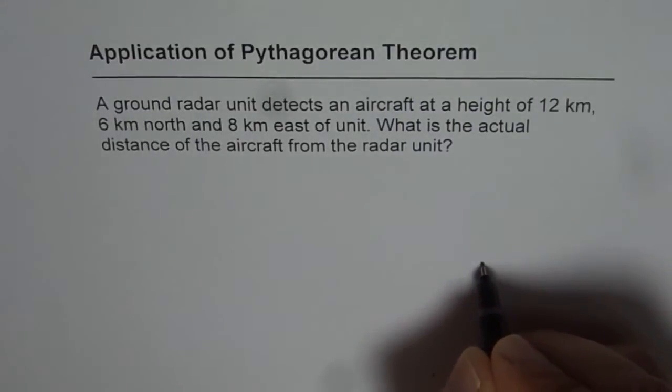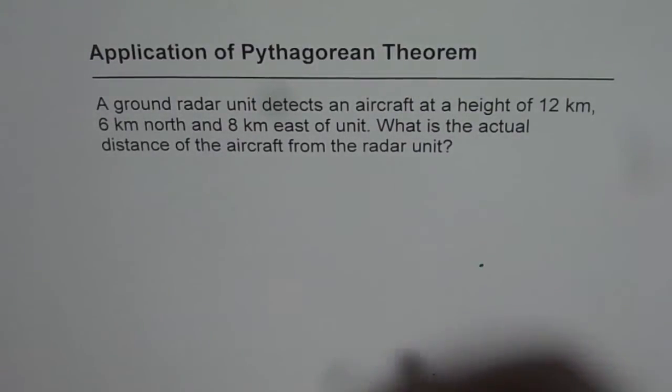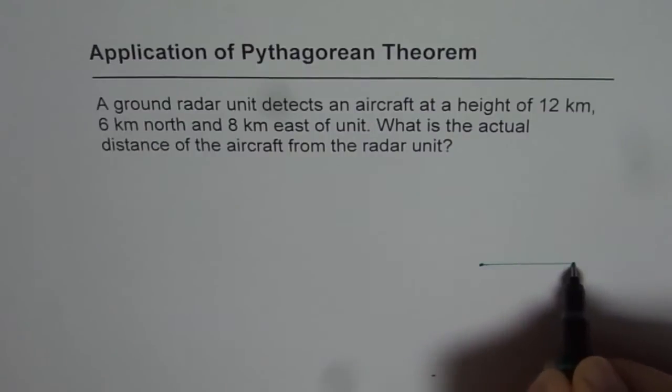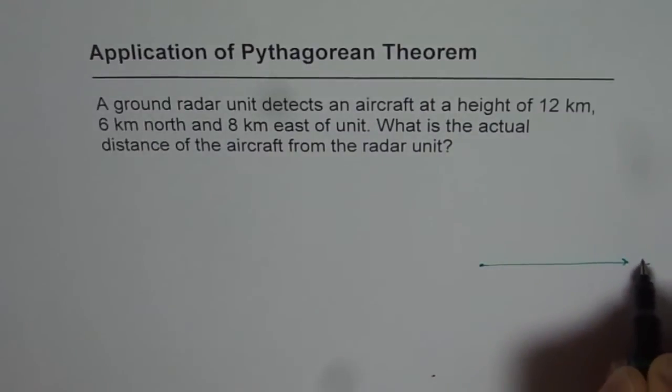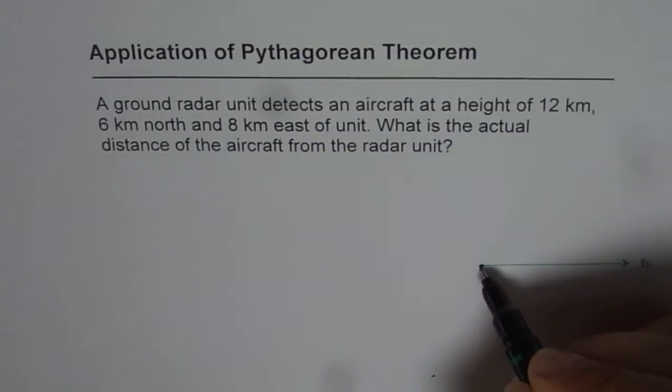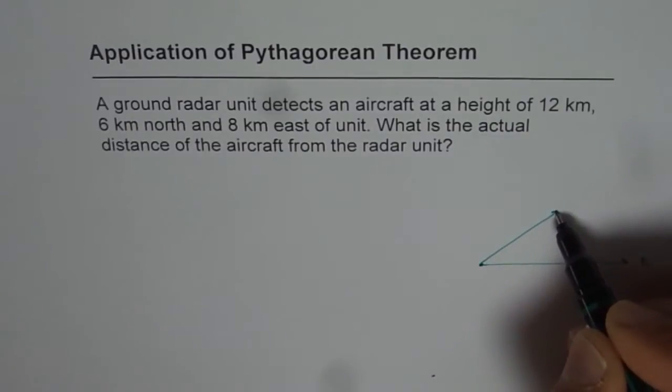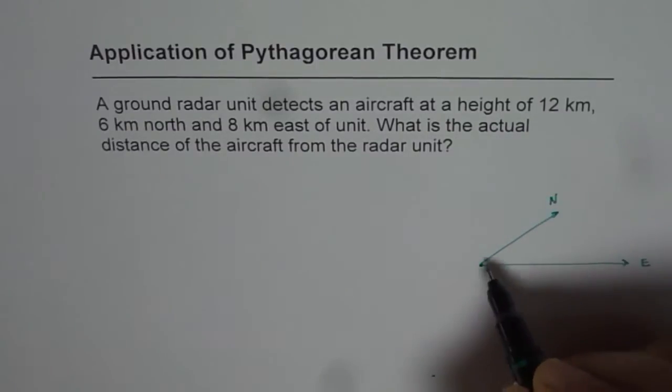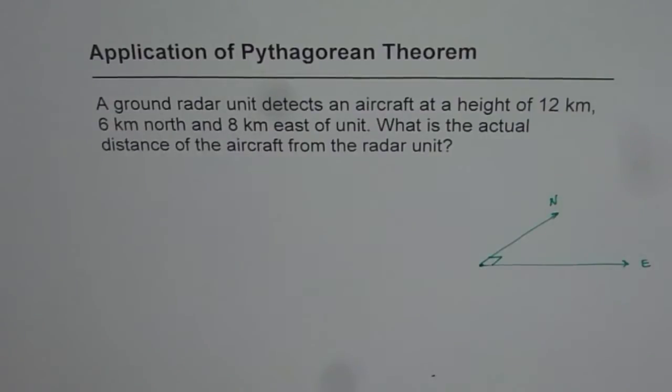So let us say that this is the position of the unit and this direction represents east. And in 3D we can say that represents north. This angle will be a 90 degrees angle. So this is a plane, horizontal plane which represents the ground itself.